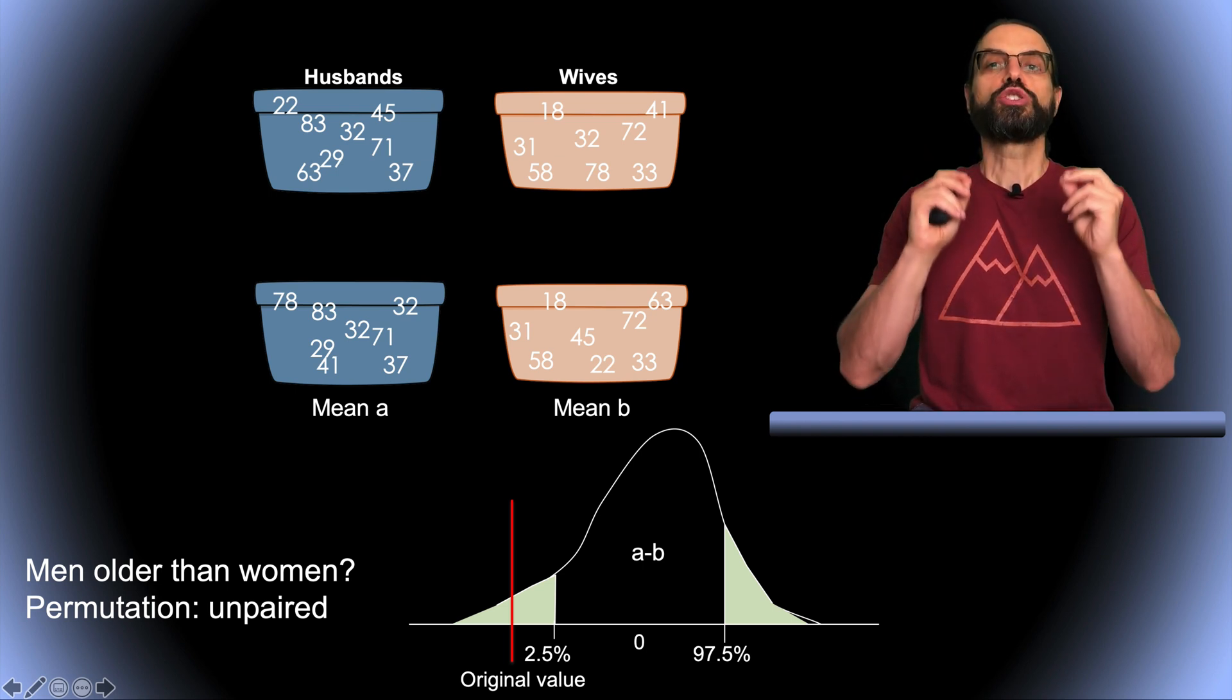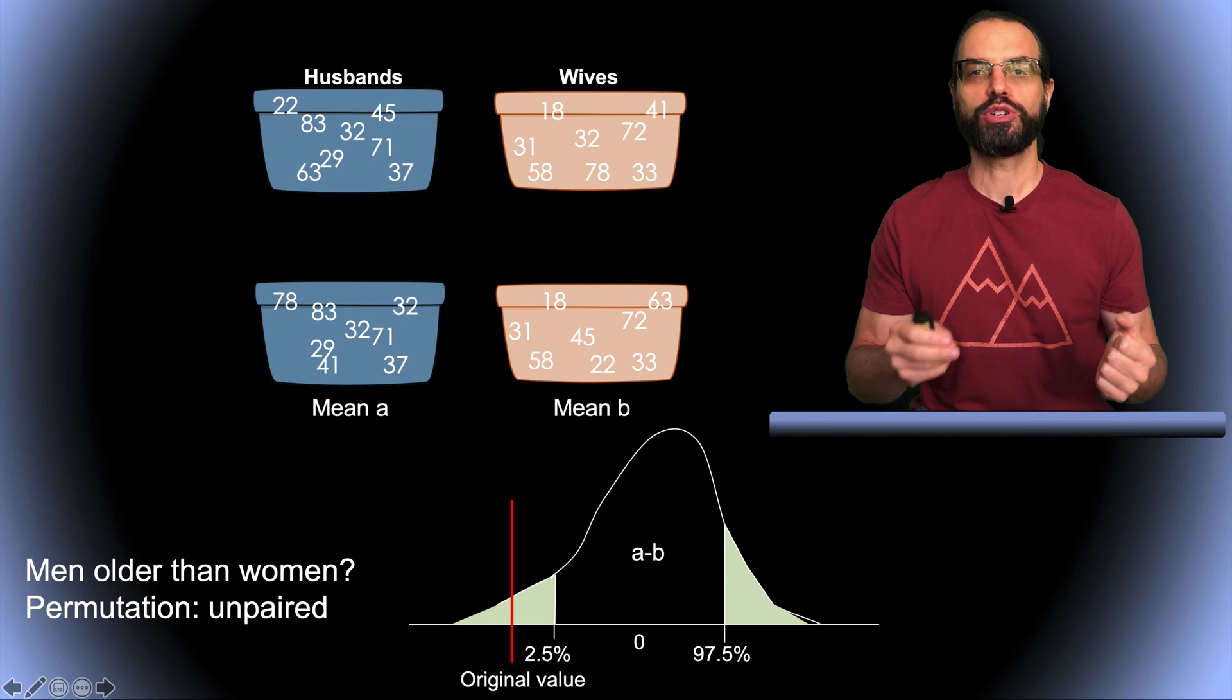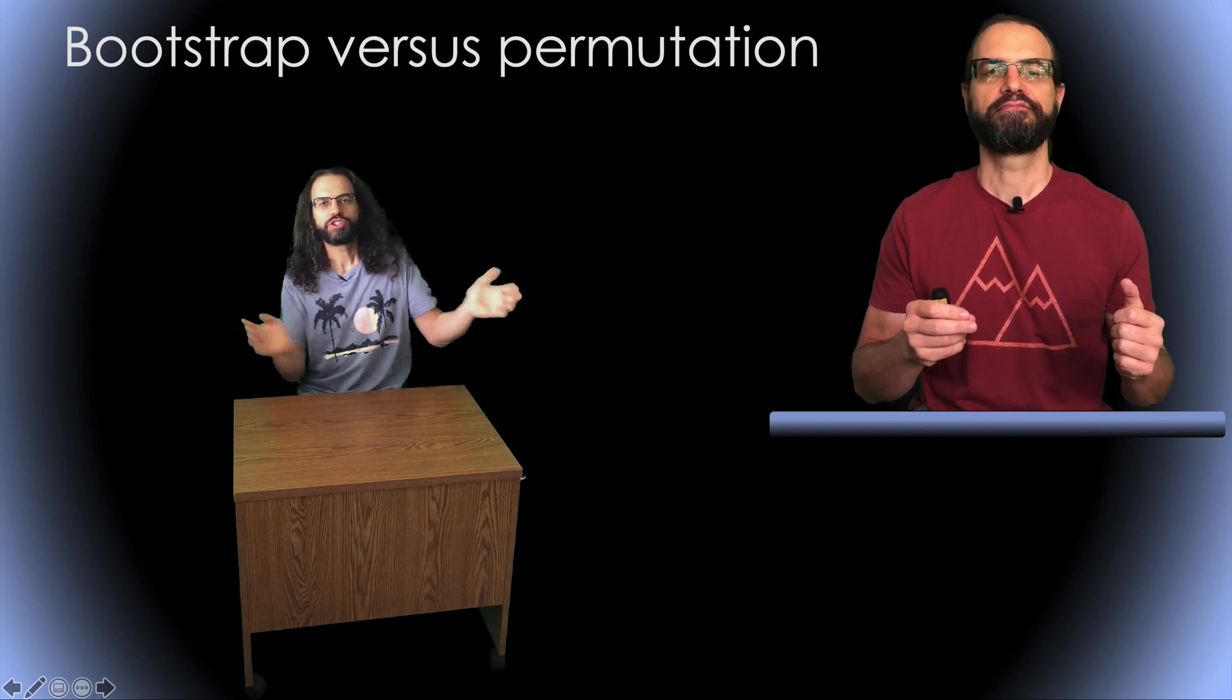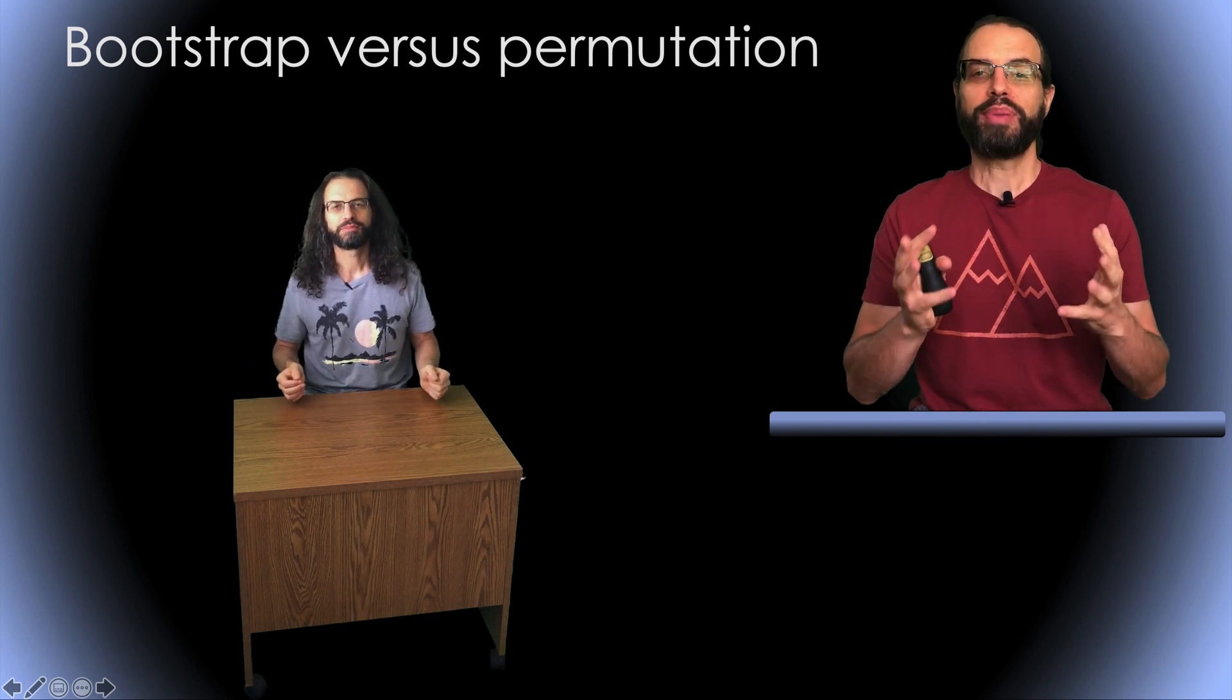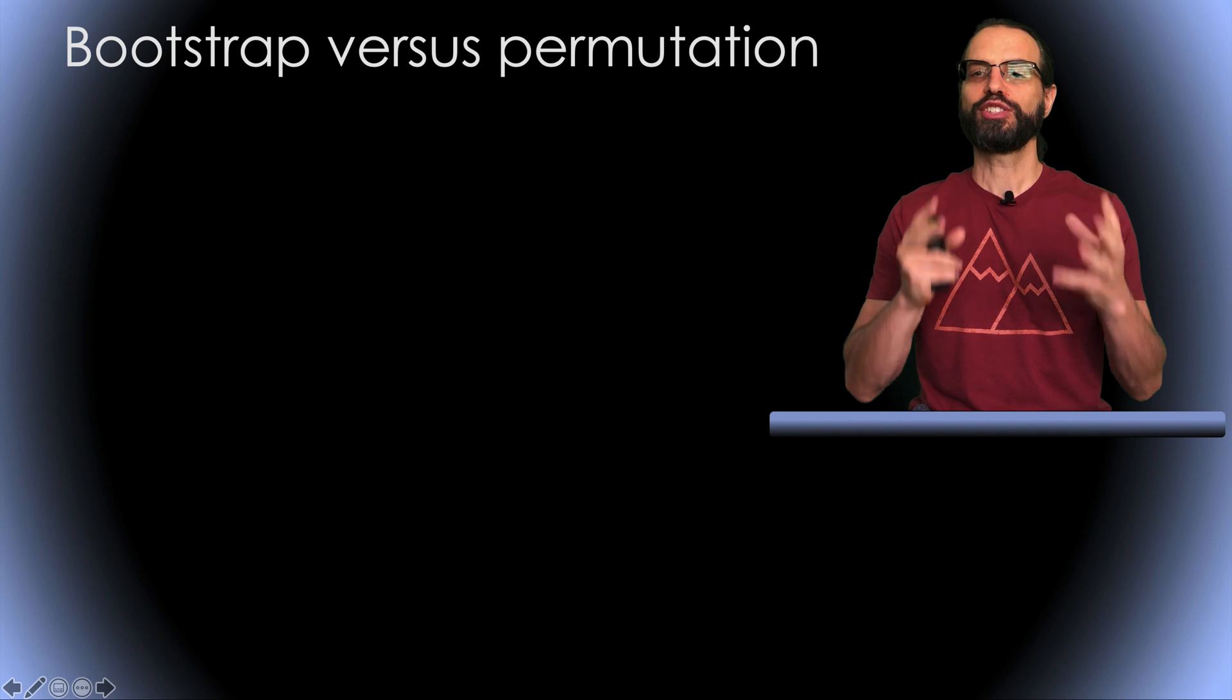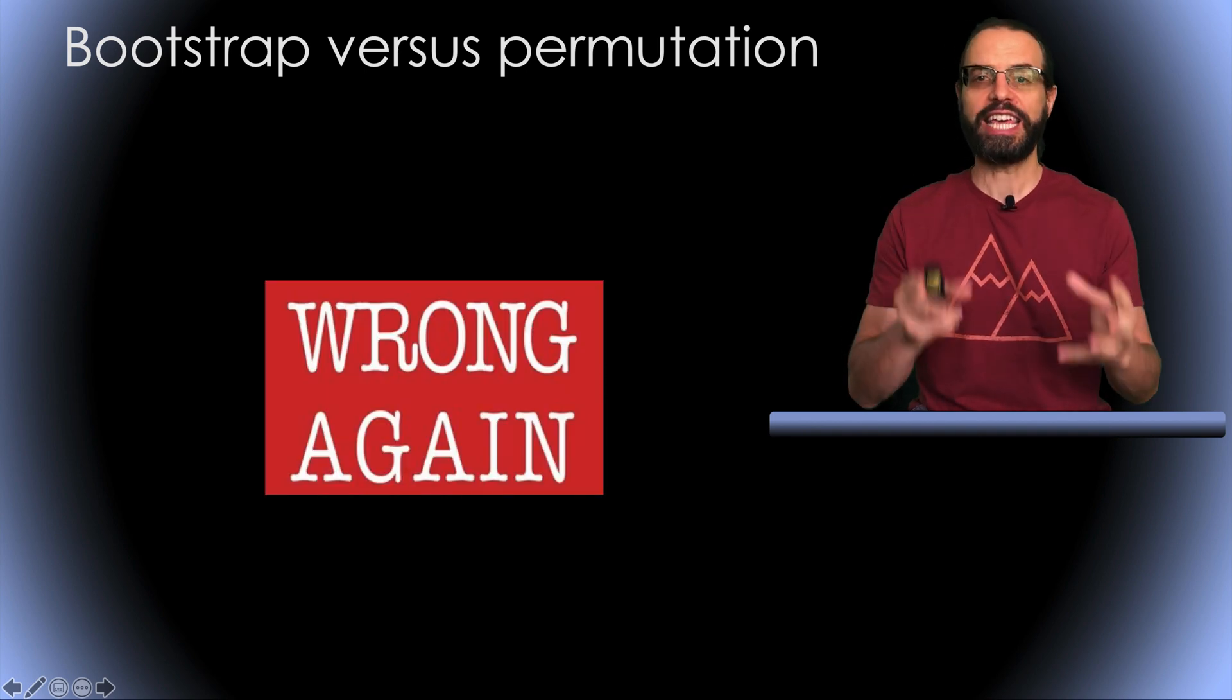So which one is better? Anyone want to bet? Mr. Delorme, Mr. Delorme. Yes, me from the past. This is an easy one. Permutation is much better. To test if A or B are different, you just simply swap the value. It's super easy. Me from the past. I'm not surprised. You're wrong. Again.